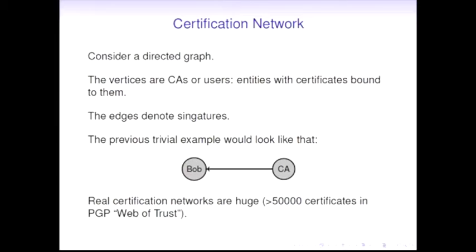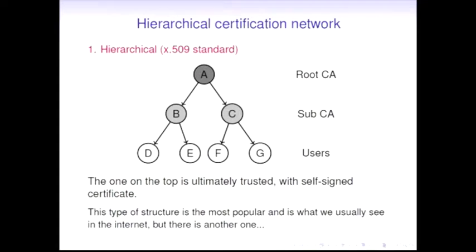Further, networks arise here. We may treat it as a directed graph where nodes are users or CAs or any entities who can sign messages, and directed edges are the acts of certification or signatures of certificates. In the real world, if you're talking about PGP web of trust, the strongly connected component contains more than 50,000 certificates - quite huge networks.